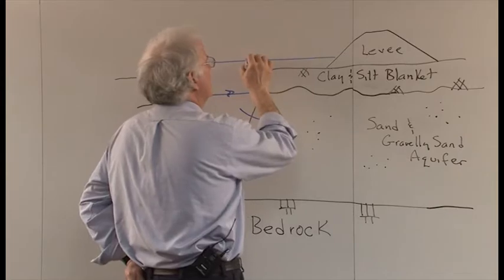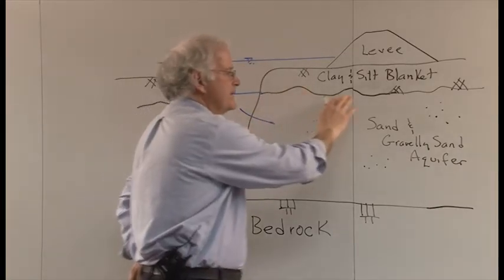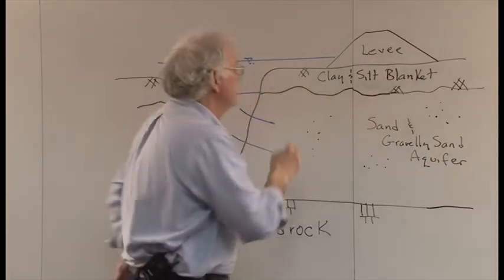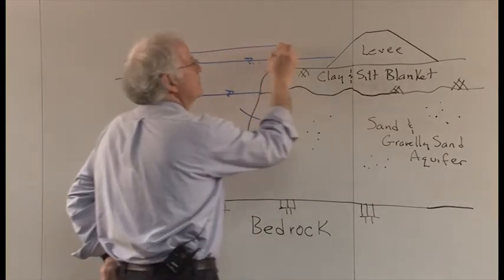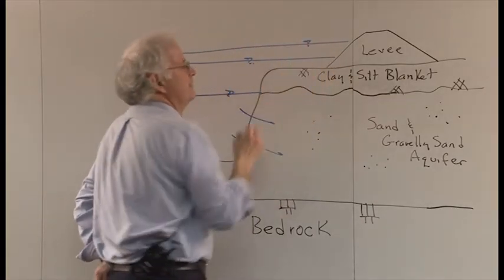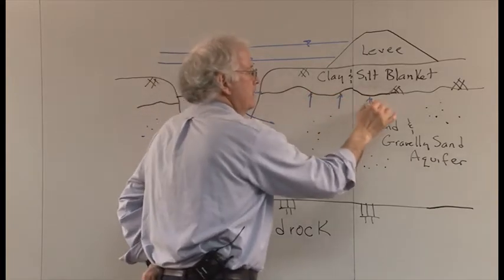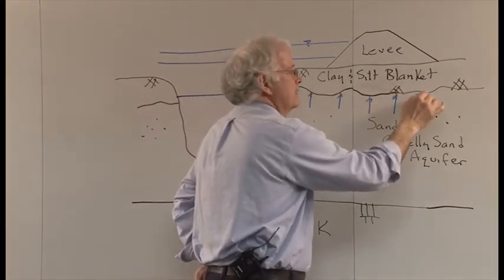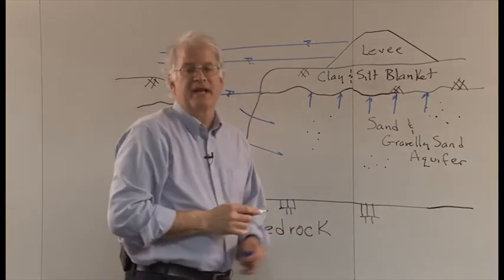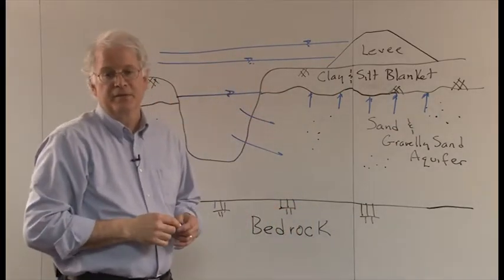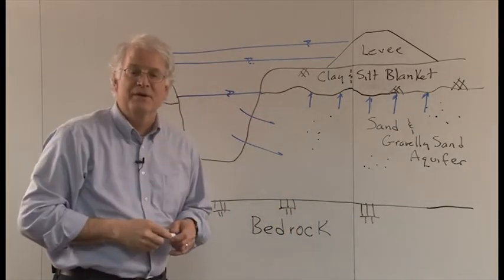As the water gets a little higher all the sands and gravels are saturated and if there's an increase in the water level above that then we start getting water pressure acting at the base of the clay and silt blanket, sometimes referred to as artesian pressure.